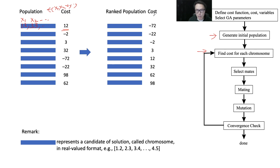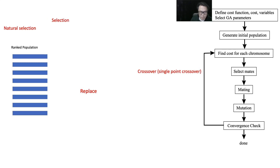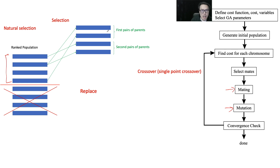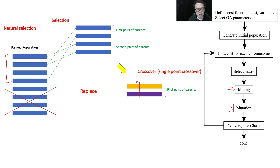At this point we rank the population and perform natural selection — lateral selection. After ranking, we draw a line and the lower half is discarded and replaced. Based on the upper half, we perform selection, crossover, and mutation. We select parent pairs: the first pair, the second pair, and so on, generating more offspring as needed.